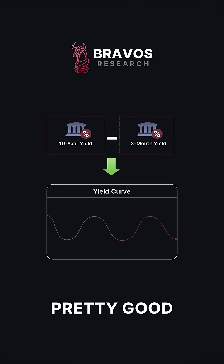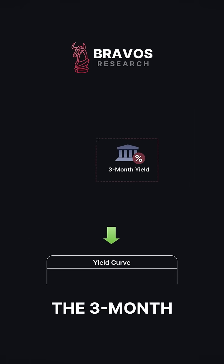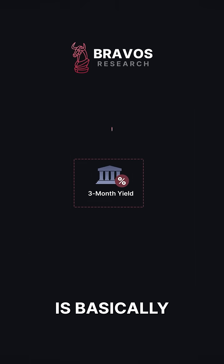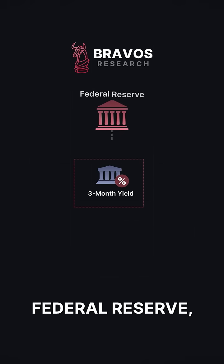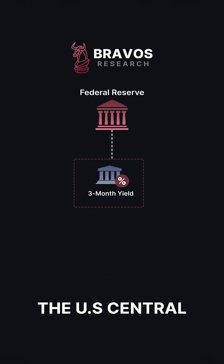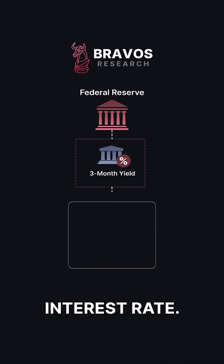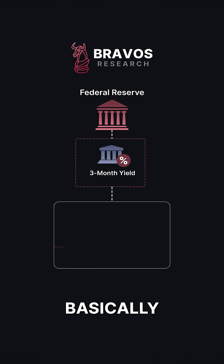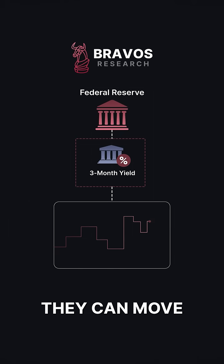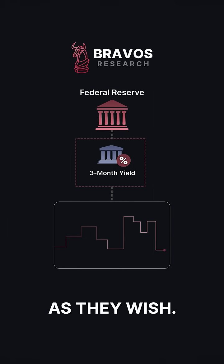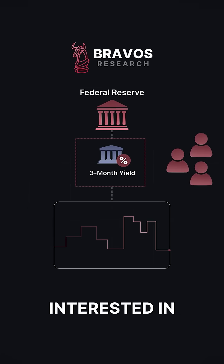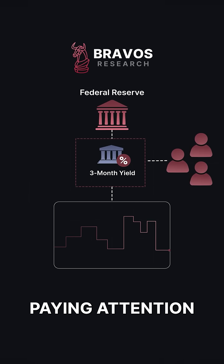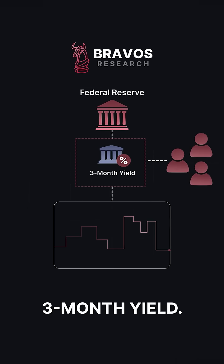There's actually a pretty good reason for this. The 3-month yield basically tracks what the Federal Reserve, the US Central Bank, is doing with their interest rate. The Fed controls the 3-month yield as they like — they can move it up and down as they wish. So naturally, if investors are interested in knowing what the Federal Reserve is doing, they should be paying attention to the 3-month yield.